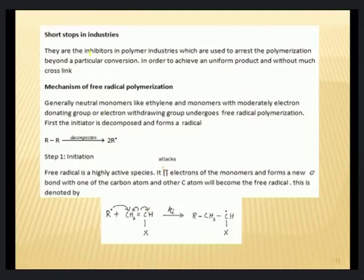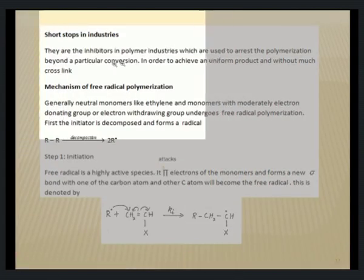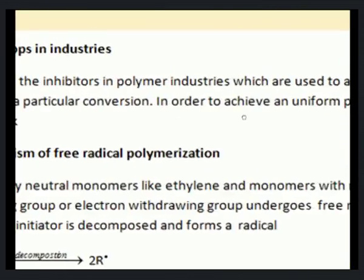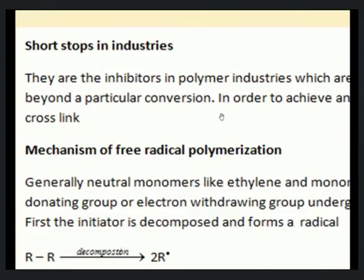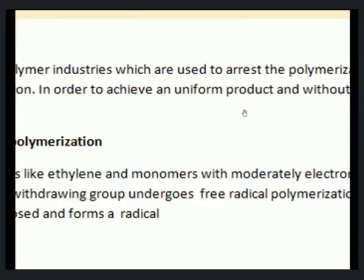Inhibitors are sometimes called short stops, particularly in industries. Short stops are inhibitors used in polymer industries to arrest polymerization beyond a particular conversion. When inhibitors are used in a polymer industry to control the rate of polymerization, they are called short stops. They are important in industries to achieve a uniform product without much variation in polymer chain length, allowing control over the effective molecular mass formed during the reaction.